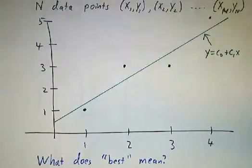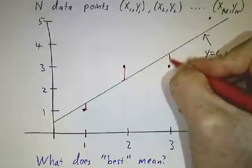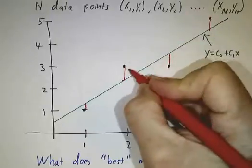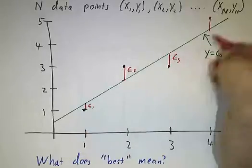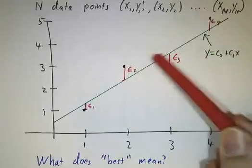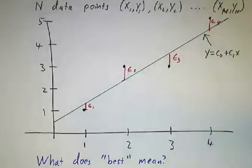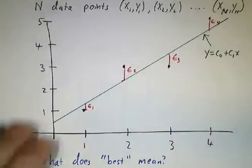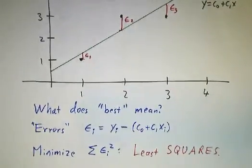Your line is going to miss by a certain amount at each point — we'll call these amounts the errors, and often use the Greek letter ε for error. So ε1 is negative, ε2 is positive, ε3 is negative, ε4 is positive. The goal is to make the errors as small as possible — specifically, we want to minimize the sum of the squares of the errors.